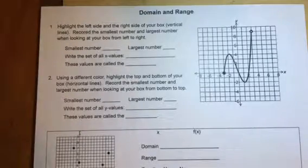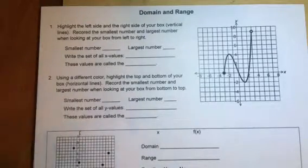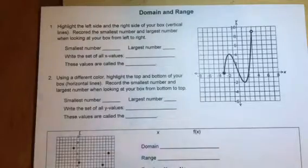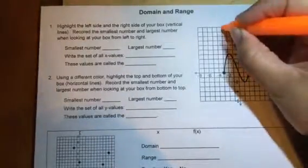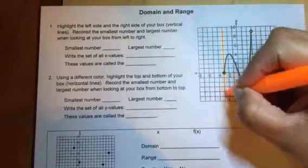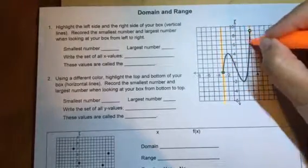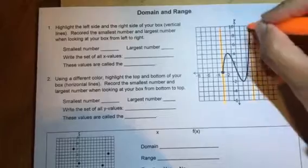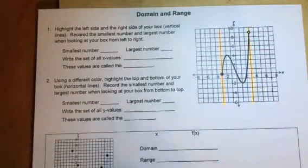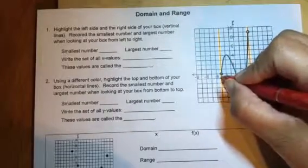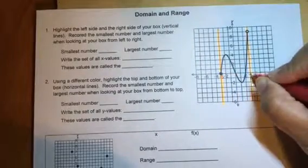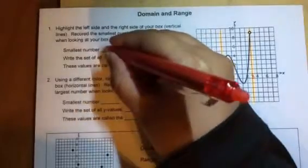On this one we're going to need highlighters. It says from left to right we're going to draw vertical lines from the smallest to largest number. So the furthest to the left and furthest to the right is essentially what it's asking for. Those two are touching at negative three and three, so my smaller number is negative three, my larger number is three.